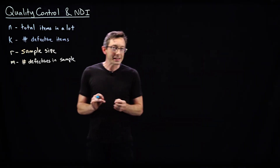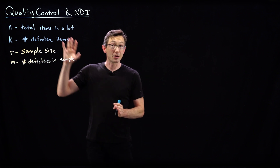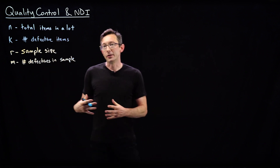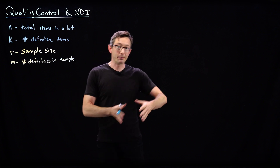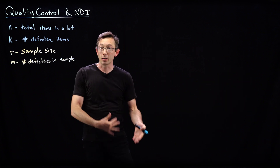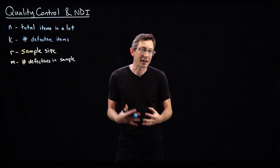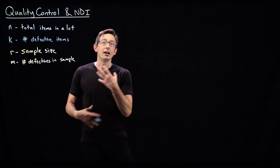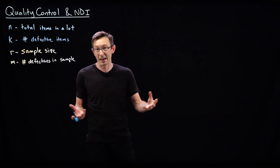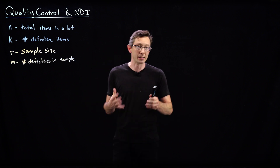Welcome back. This is a really cool example relating to quality control and manufacturing. Oftentimes if you have a factory putting out parts or objects, you want to test the quality of those objects, but many times actually testing quality involves some kind of destructive inspection — you have to test that part to failure, or cut it open to see if it was made right.